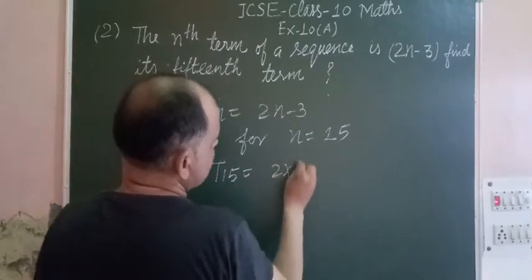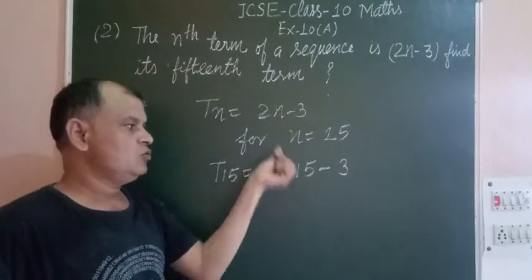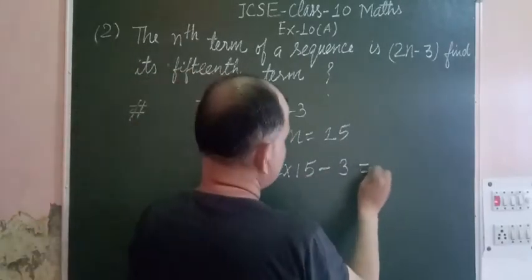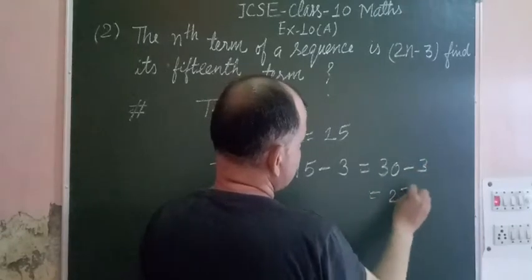So T15 equals 2 times 15 minus 3, which equals 30 minus 3, which is 27.